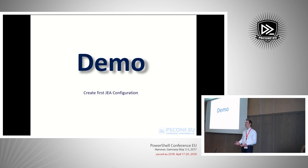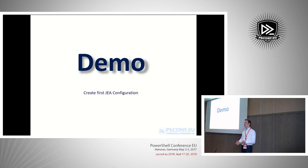What I'll be doing now is creating a first JEA configuration. I will do this by creating a role capability file, attach it to a JEA configuration, and show you the whole process of building this. The system I'm building this on is just my own laptop. In later demos I will be working with a domain controller/Hyper-V server to show different roles. If at any point anything is unclear or I'm going too fast or too slow, just let me know.